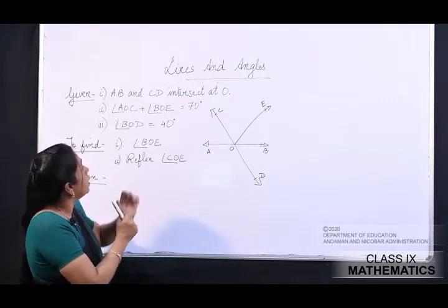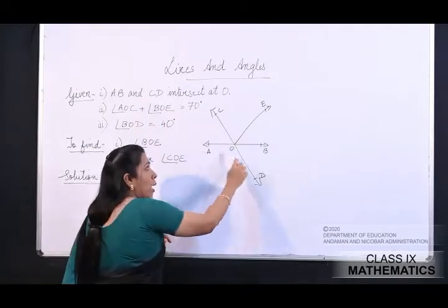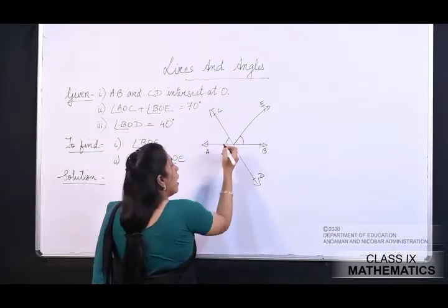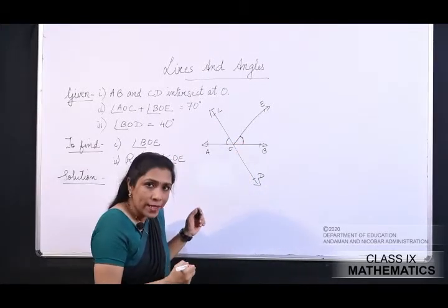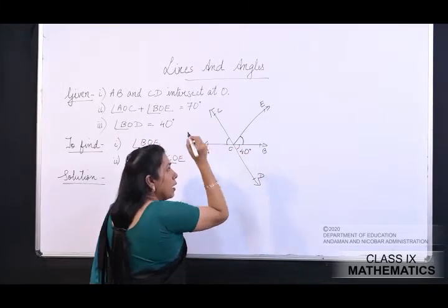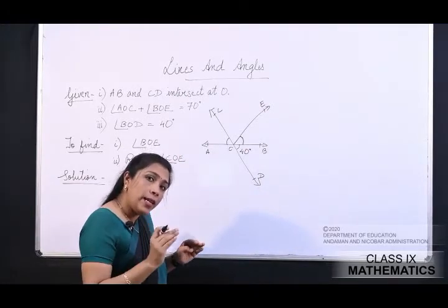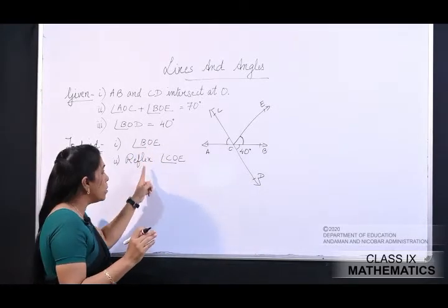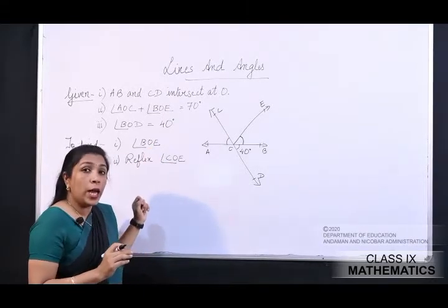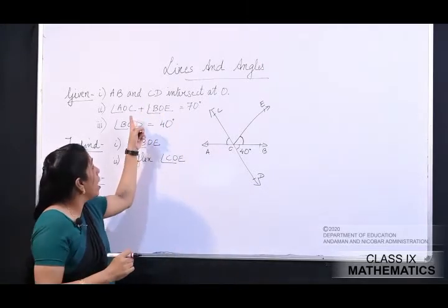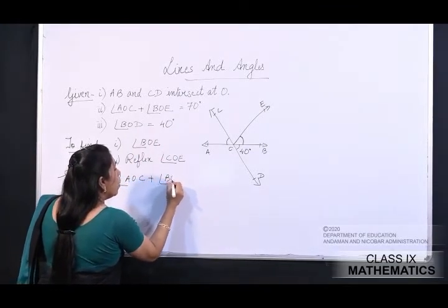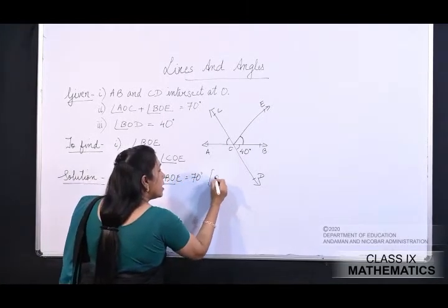What all is given? AB and CD intersect at O. Angle AOC plus angle BOE is equal to 70 degree, and angle BOD is equal to 40 degree. Aapko gyaat karna hai: angle BOE aur reflex angle COE.